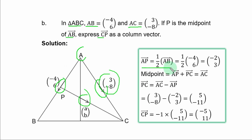AP is half of AB in this form. So you multiply vector AB by half, you have this column vector. 1 over 2 times negative 4, you have negative 2. 1 over 2 times 6, you have 3.